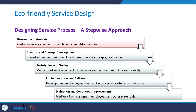After understanding flow charting and blueprinting, let's understand the stepwise approach to designing service processes. There are five steps. The first is research and analysis. The process begins with comprehensive research and analysis to understand customer needs, market trends, and the competitive landscape. Techniques such as customer surveys, market research, and competitive analysis are used to gather insights and identify opportunities for service improvement.